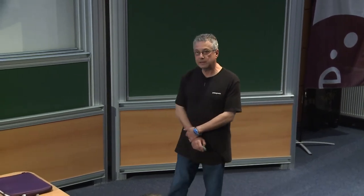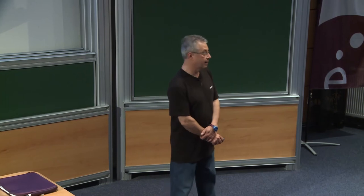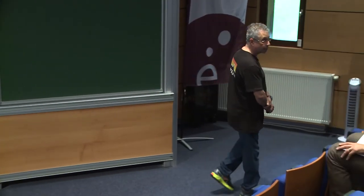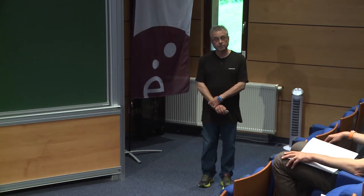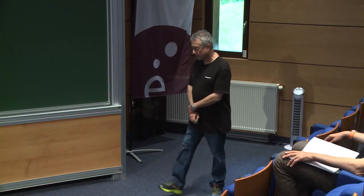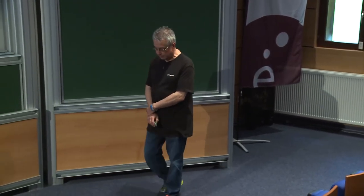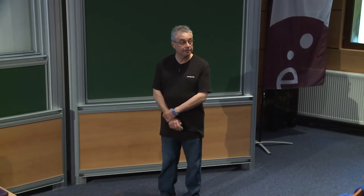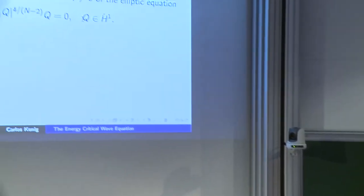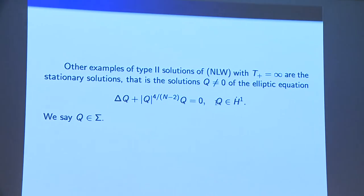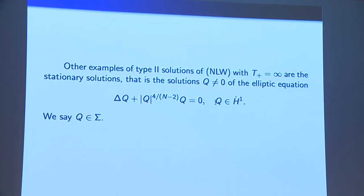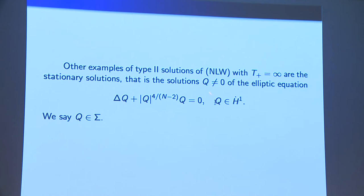The Yamabe problem asks whether, given a compact Riemannian manifold in dimension three, you can make a conformal change of the metric so that the resulting metric has constant scalar curvature. The study of this elliptic equation was very important in the solution of this problem.